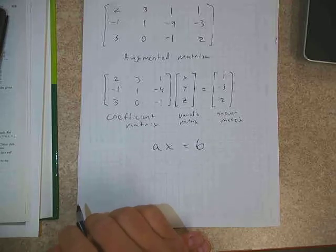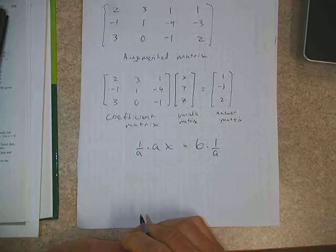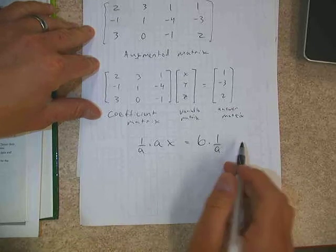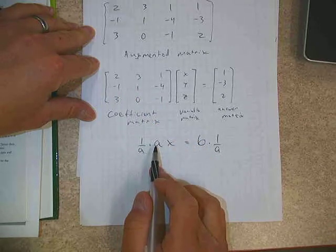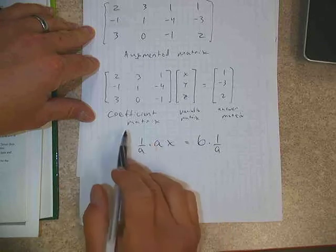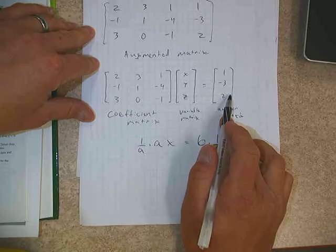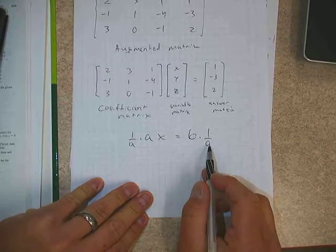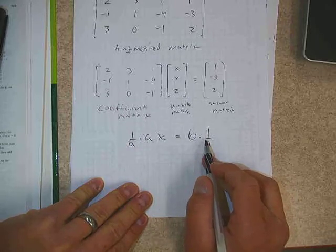This sounds complicated, but the answer is no different than solving ax equals b: you'd divide by a, or equivalently multiply by 1 over a to get x alone. So we're going to do absolutely the same thing here — to get rid of the coefficient matrix, we multiply both sides by its multiplicative inverse, since a and 1/a are multiplicative inverses of each other.